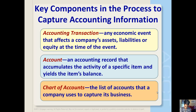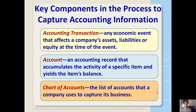An example of an accounting transaction would include the purchase of equipment, the consumption of supplies in operations, or the issuance of debt or stock. In each of those examples, the event increases or decreases a specific asset, liability, or equity account of the company. For example, a company's cash account is increased and decreased as cash is received and paid, and shows the amount of cash held at any point in time.